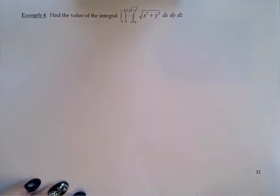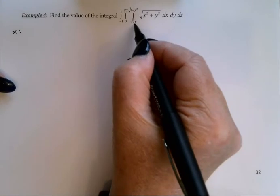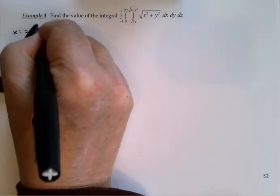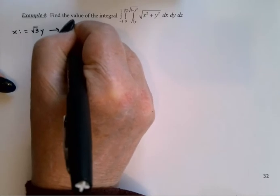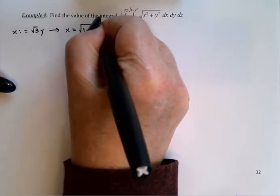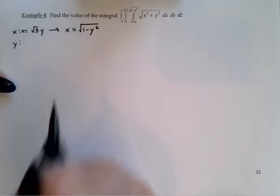I'd like to consider what the limits of integration tell me about the region before making a final decision. So x goes from x equals the square root of 3 times y.